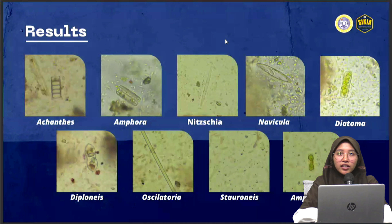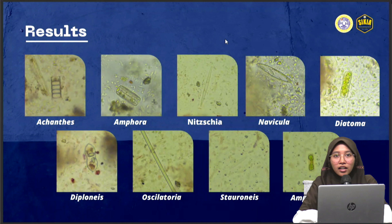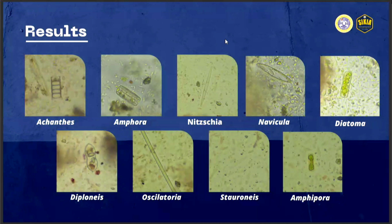The results show several genera of diatoms, including Acanthes, Amphora, Nitzschia, Navicula, Diatoma, Diploneis, Oscillatoria, Stauroneis, and Amphipora.